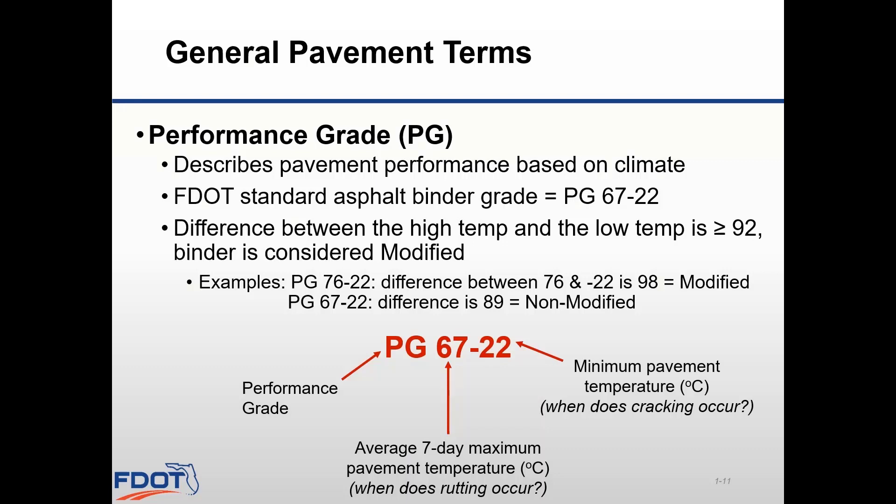Now let's talk about performance grade of the binder. The PG describes the expected pavement performance based on the climate where it's installed. The numbers listed with the PG are temperatures in degrees Celsius. The high number is the average seven-day maximum pavement temperature where rutting occurs, and the low number is the minimum temperature when cracking occurs. The maximum temperature value is an average because asphalt tends to rut after a period of time. The minimum temperature is a single value because thermal cracking happens instantaneously — we're only concerned with that minimum temperature that will cause the instantaneous crack.